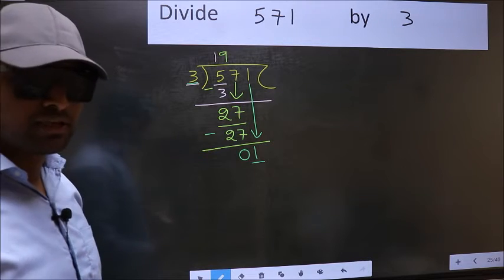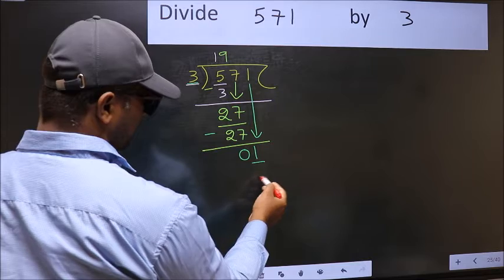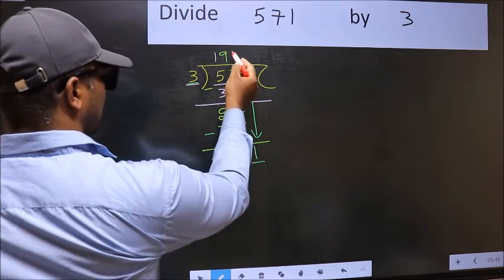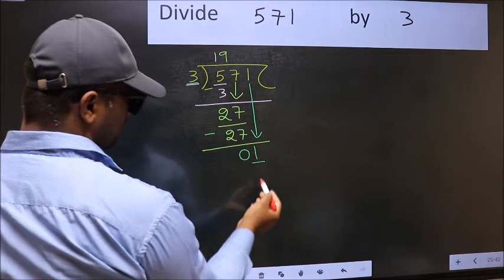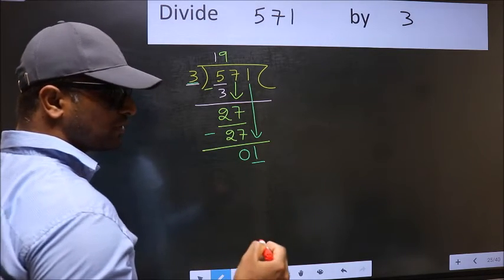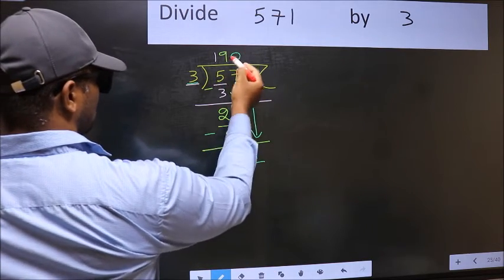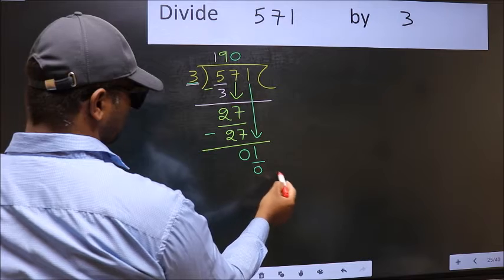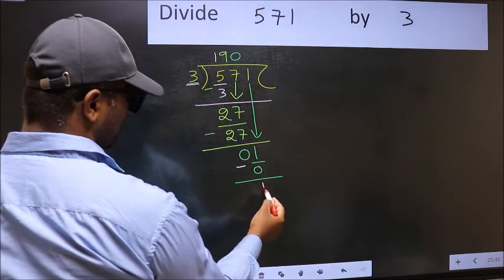Instead, what you should think of doing is, what number should we write here? If I take 1 here, I will get 3. But 3 is larger than 1. So what we should do is, we should take 0. So 3 into 0, 0. Now you subtract 1 minus 0, 1.